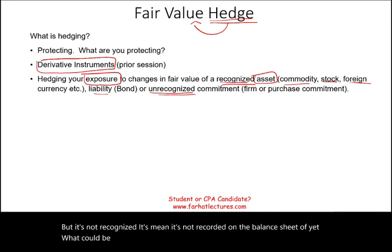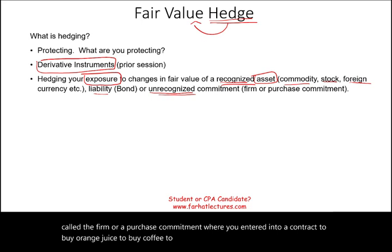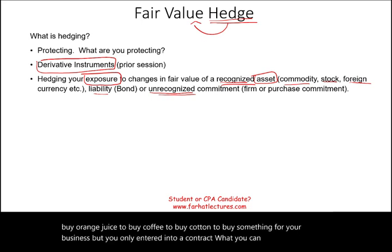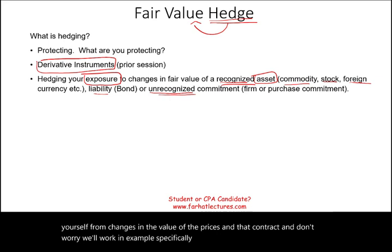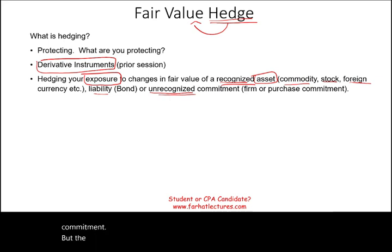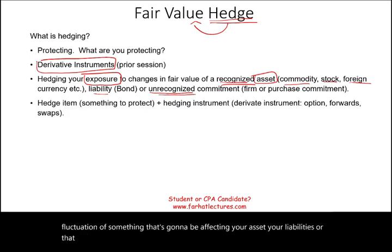An example of an unrecognized commitment is a firm purchase commitment, where you entered into a contract to buy orange juice, coffee, cotton — something for your business — but you've only entered into a contract. You can protect yourself from changes in the value of prices in that contract. The idea is you are trying to protect yourself from the fluctuation affecting your asset, liabilities, or that unrecognized firm commitment contract.